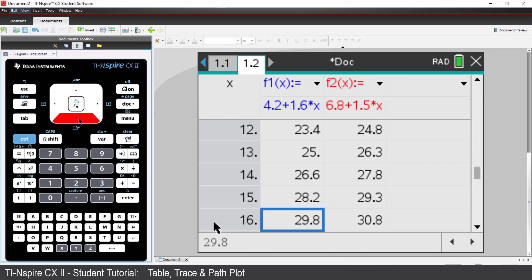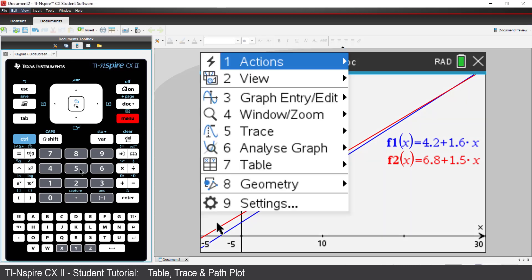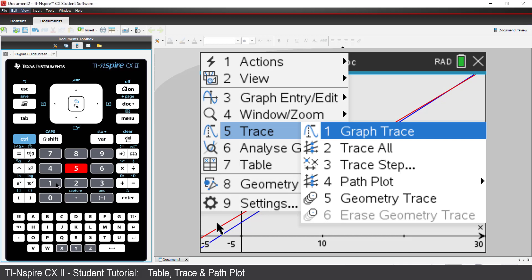To turn the table off, press CTRL followed by T. Another way to explore the fares is to use the Trace option. Press Menu, select Trace, followed by Graph Trace.